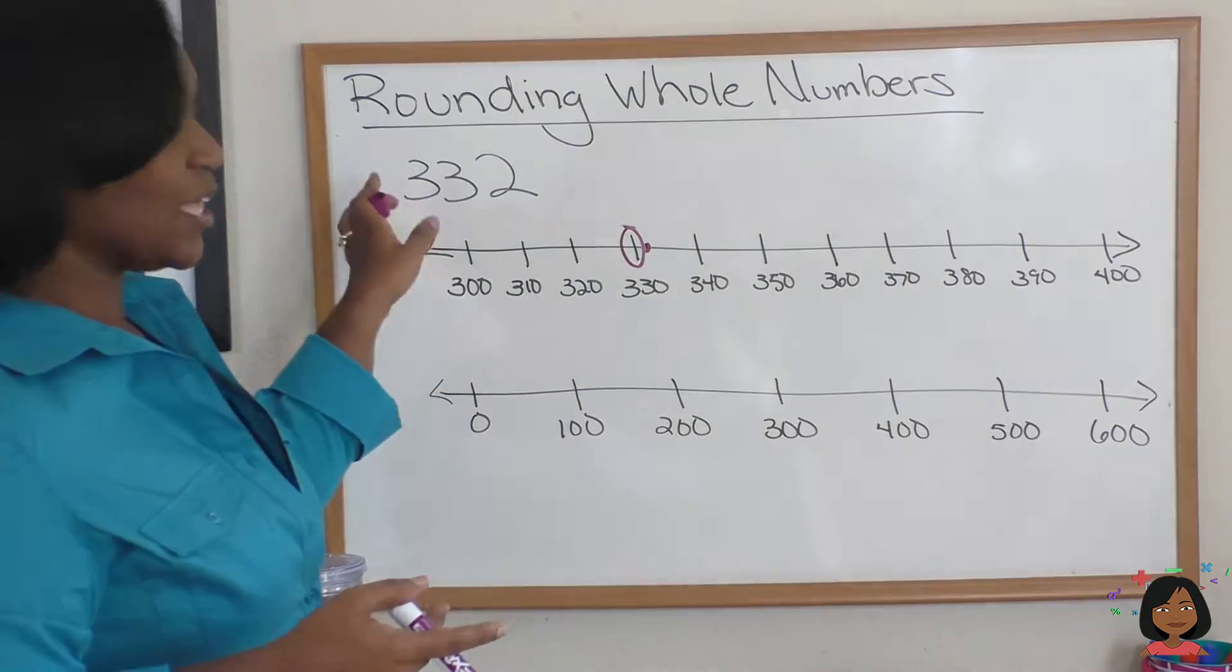That is the closest whole number that ends in a zero that 332 is close to. Now what if I said, let's round the same number 332 to the nearest hundred. Well, look at my number line down here, it's counting by 100s. We can see that 332 falls somewhere between 300 and 400.